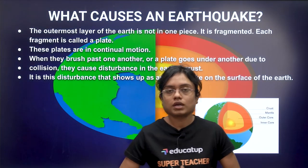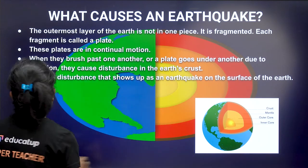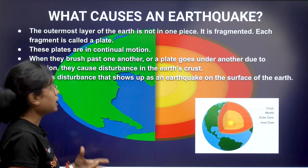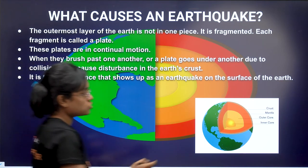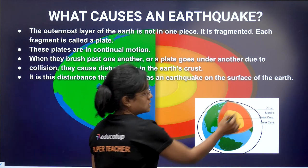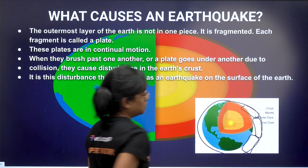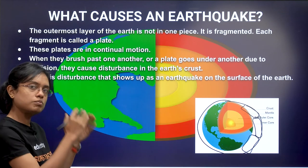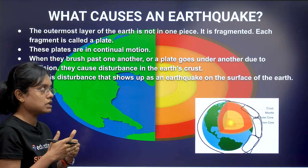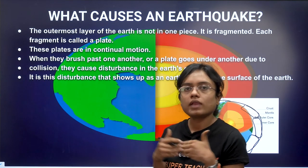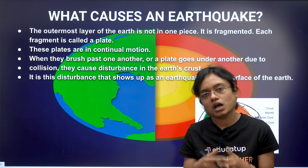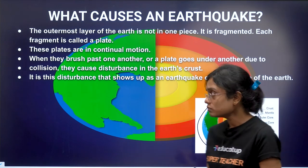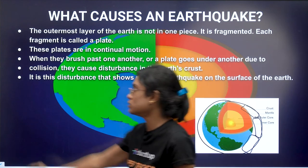What causes an earthquake? The outermost layer of the earth is not in one piece — it is fragmented, and each fragment is called a plate. These plates are in continuous motion. When they brush past each other or collide, the place of collision experiences a shaking of the earth, resulting in an earthquake. This disturbance in the plates of the earth is what causes earthquakes.